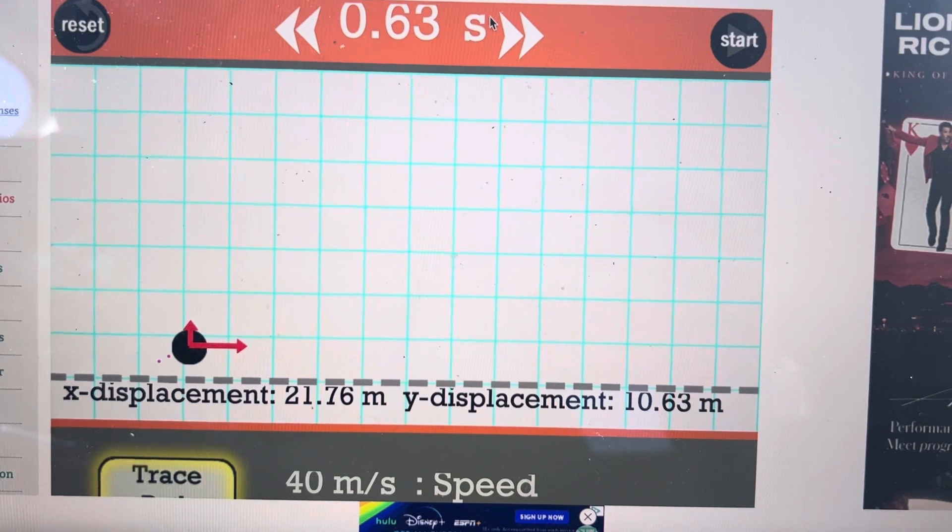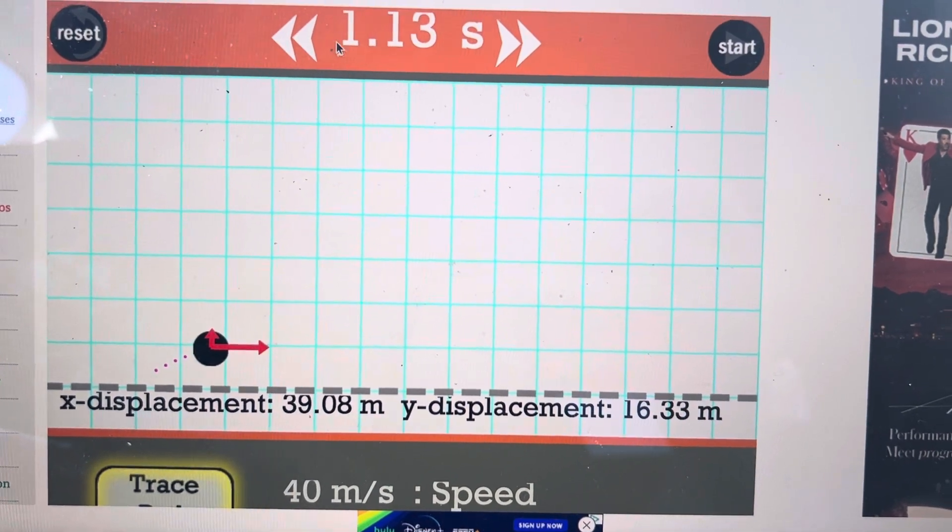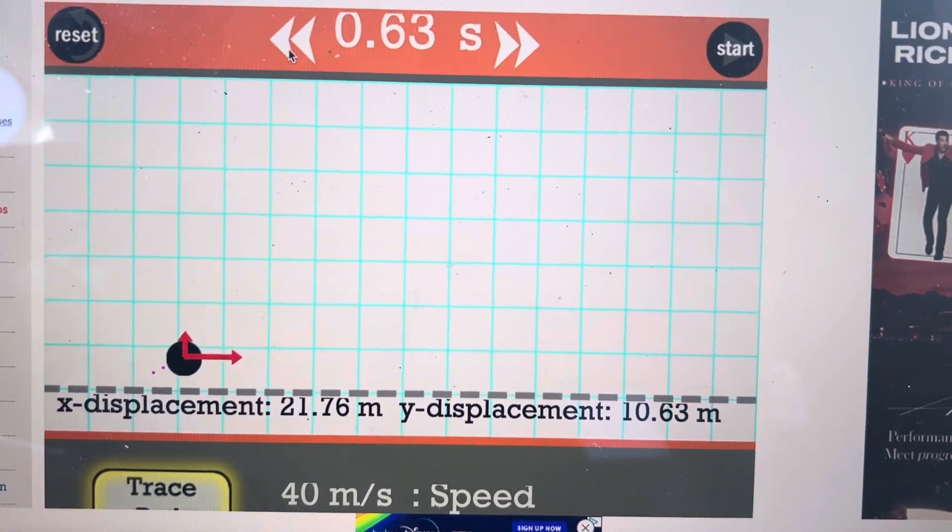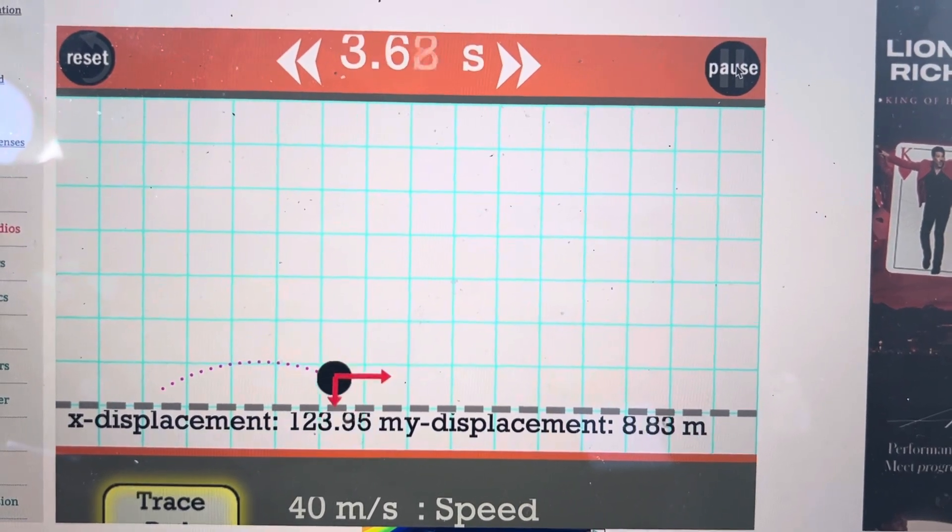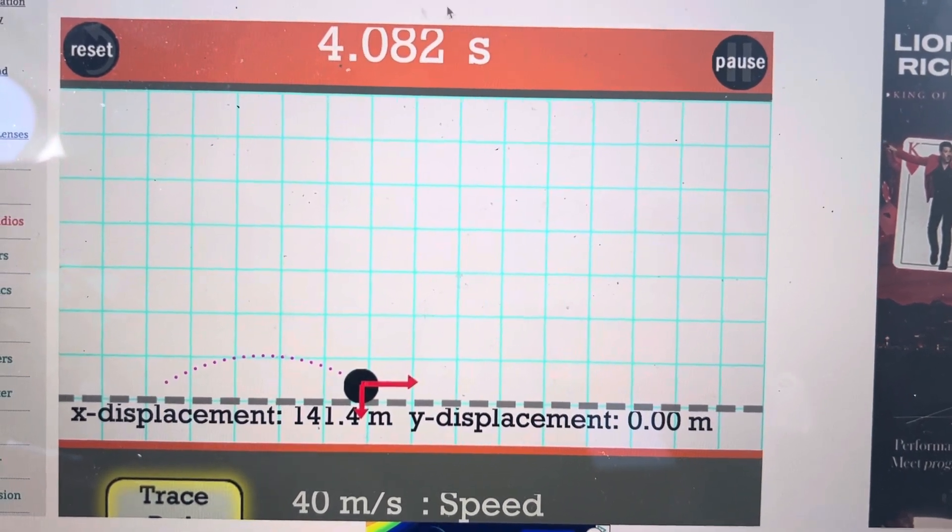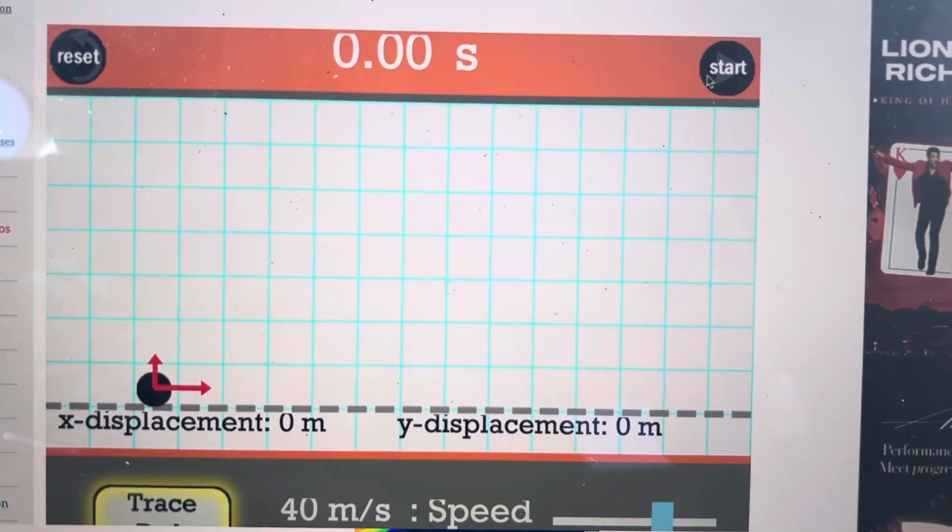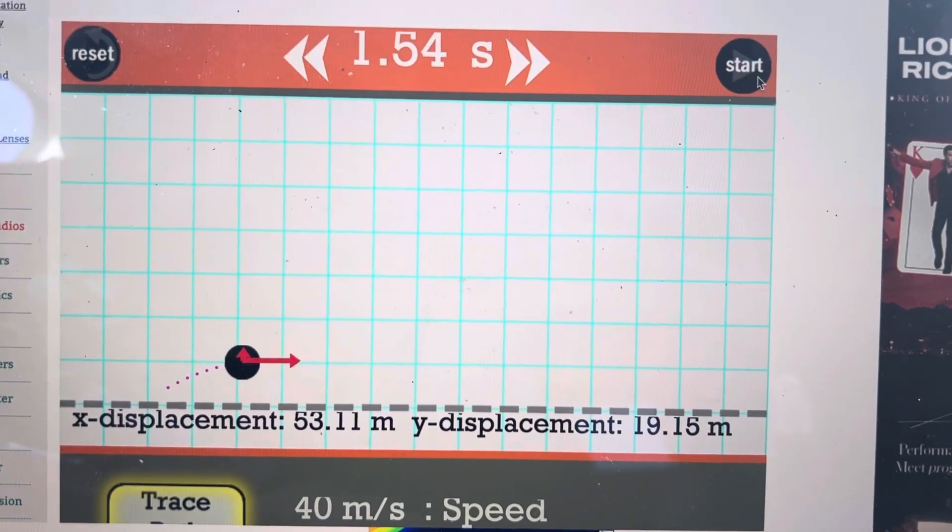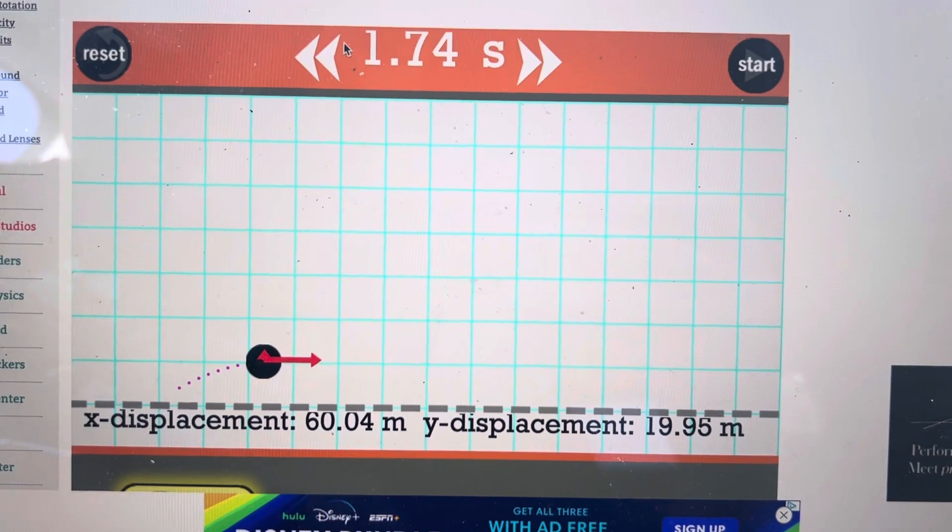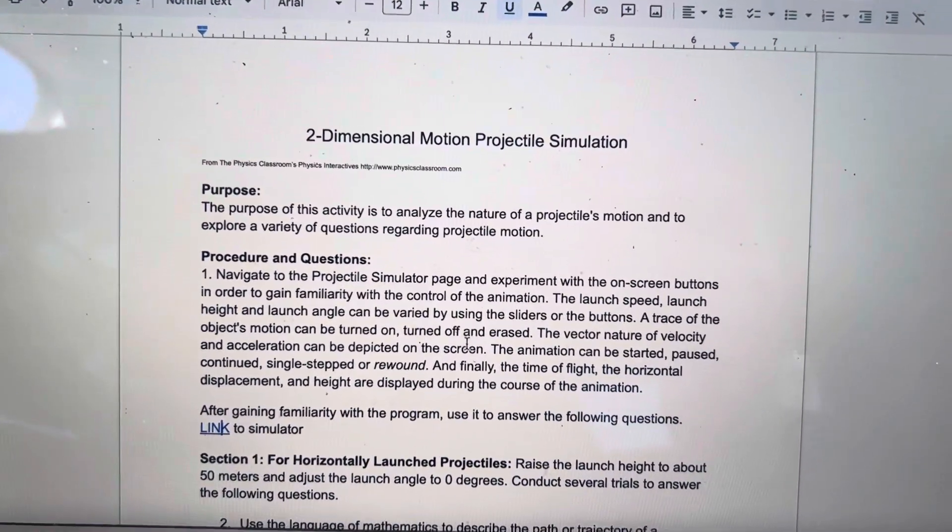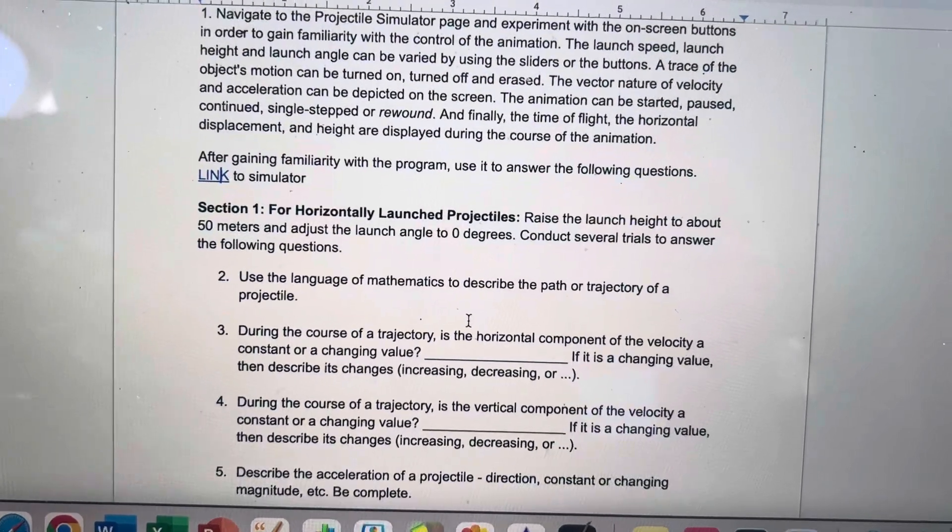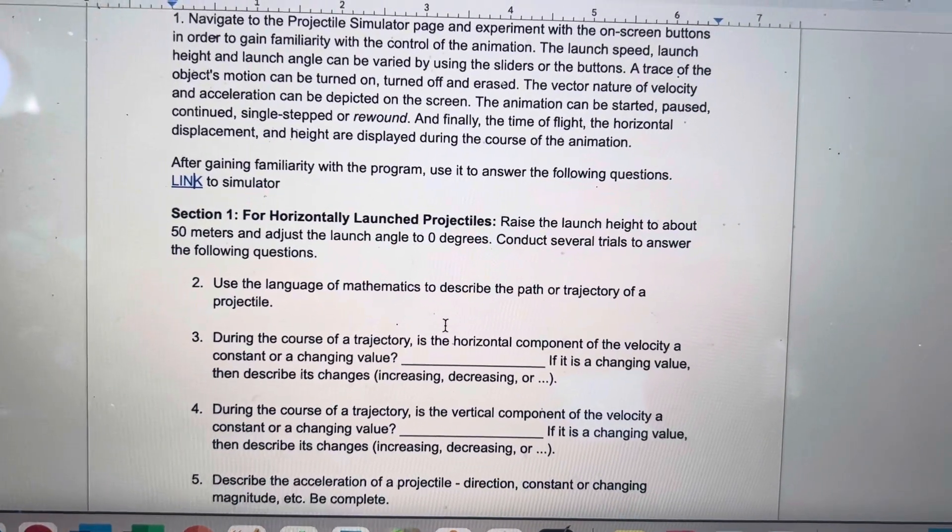We can pause the simulation, and when we do, we can fast forward and rewind. If you get all the way to the end, the fast forward and rewind buttons disappear, but you can always run it again. Once you pause, you'll see those options. That's our simulator. First, we want to use the language of math to describe the path.